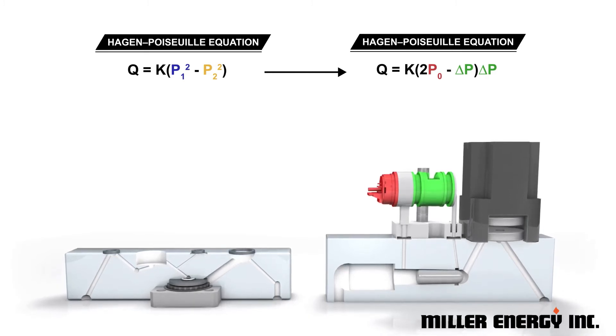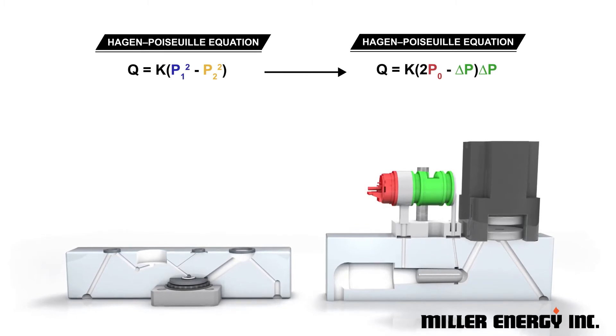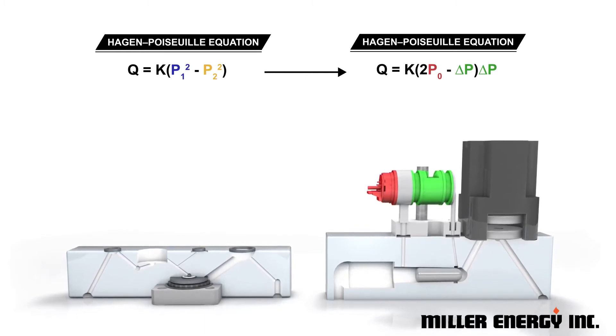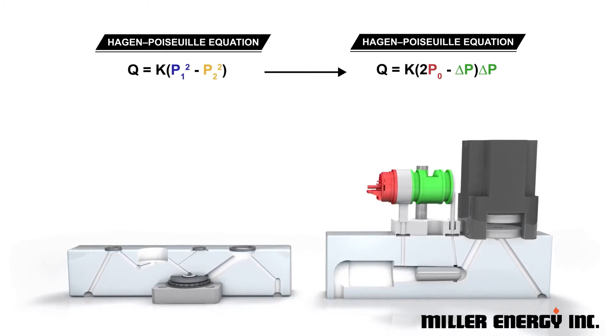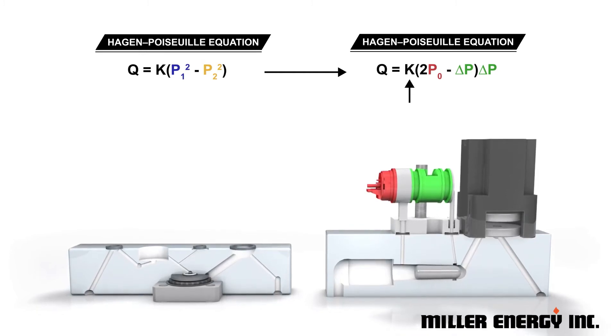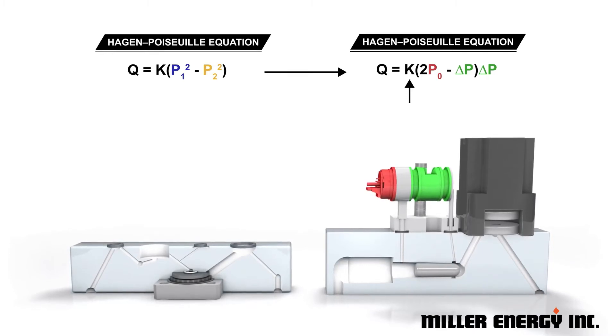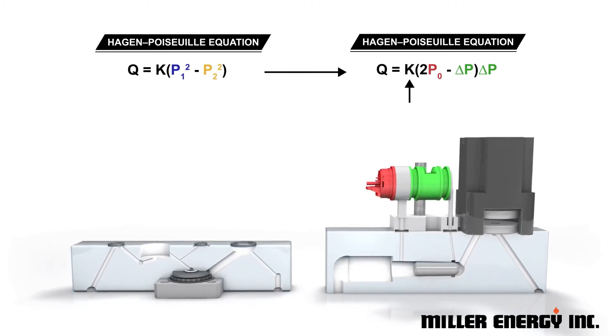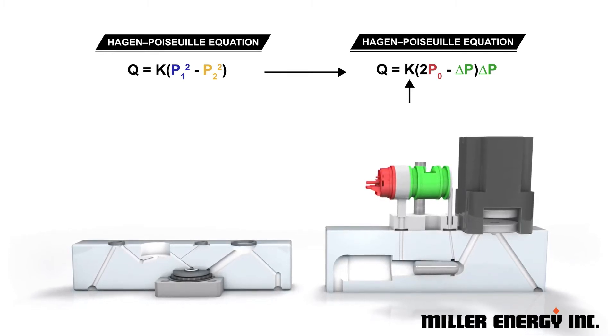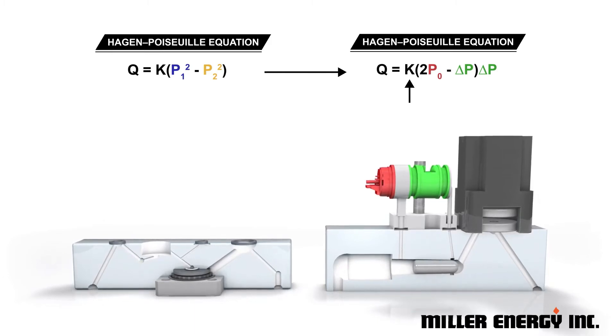This reduces measurement uncertainty and improves accuracy, particularly for critical low-vapor pressure process gases. The K-factor in the equation is an empirical constant dependent on the temperature, viscosity, and compressibility of the gas, and the geometry of the laminar flow element.